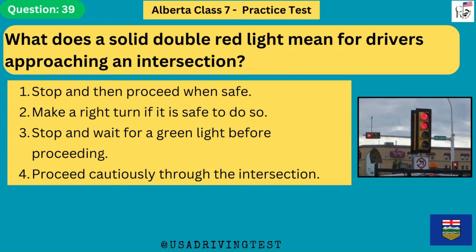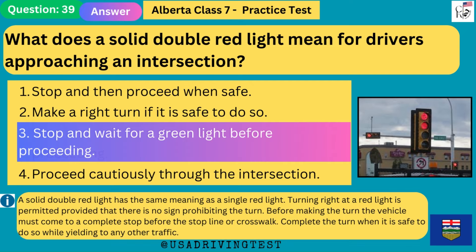What does a solid double red light mean for drivers approaching an intersection? 1. Stop and then proceed when safe. 2. Make a right turn if it is safe to do so. 3. Stop and wait for a green light before proceeding. 4. Proceed cautiously through the intersection. The answer is 3: stop and wait for a green light before proceeding. A solid double red light has the same meaning as a single red light. Turning right at a red light is permitted provided there is no sign prohibiting the turn. The vehicle must come to a complete stop before the stop line or crosswalk, then complete the turn safely while yielding to other traffic.